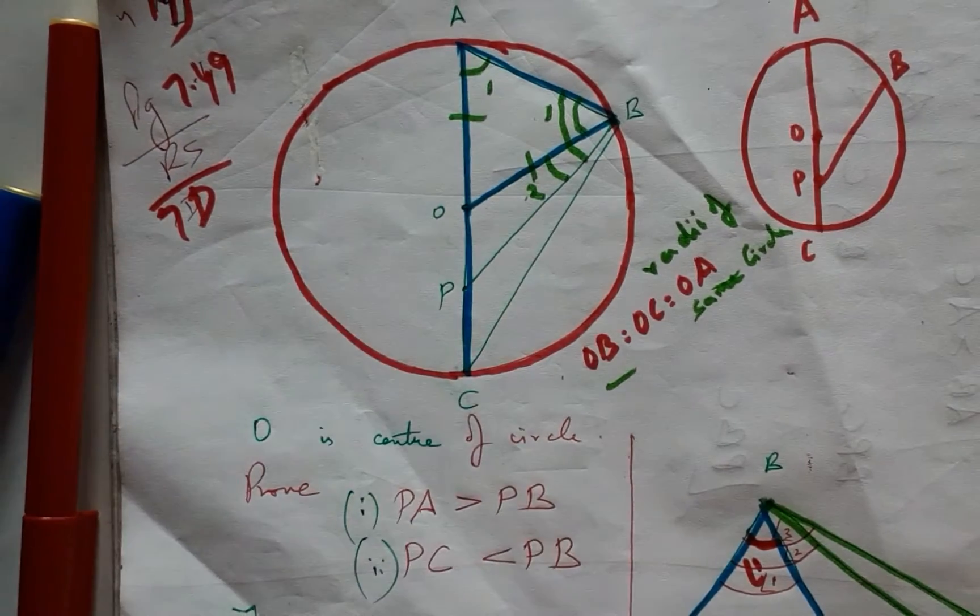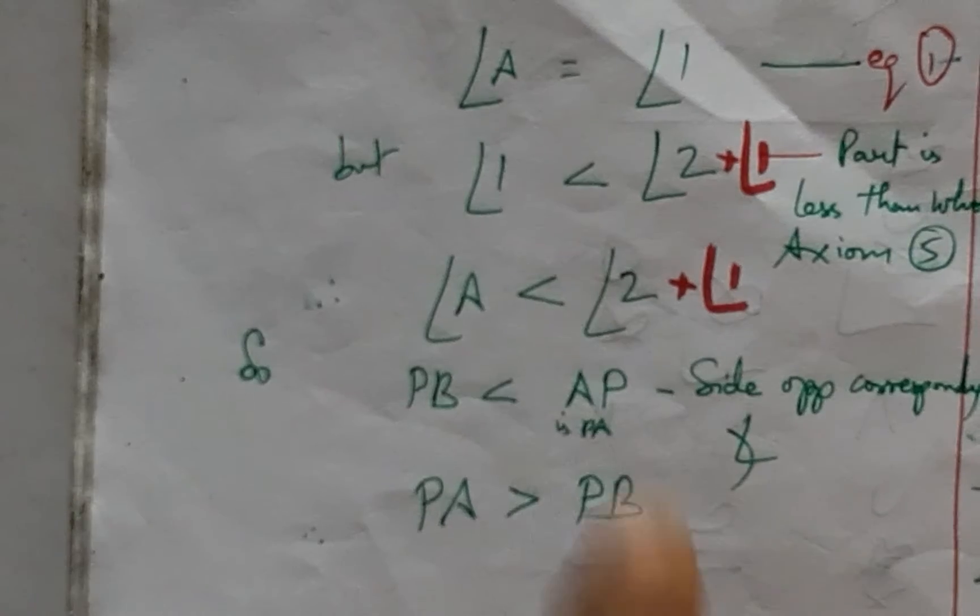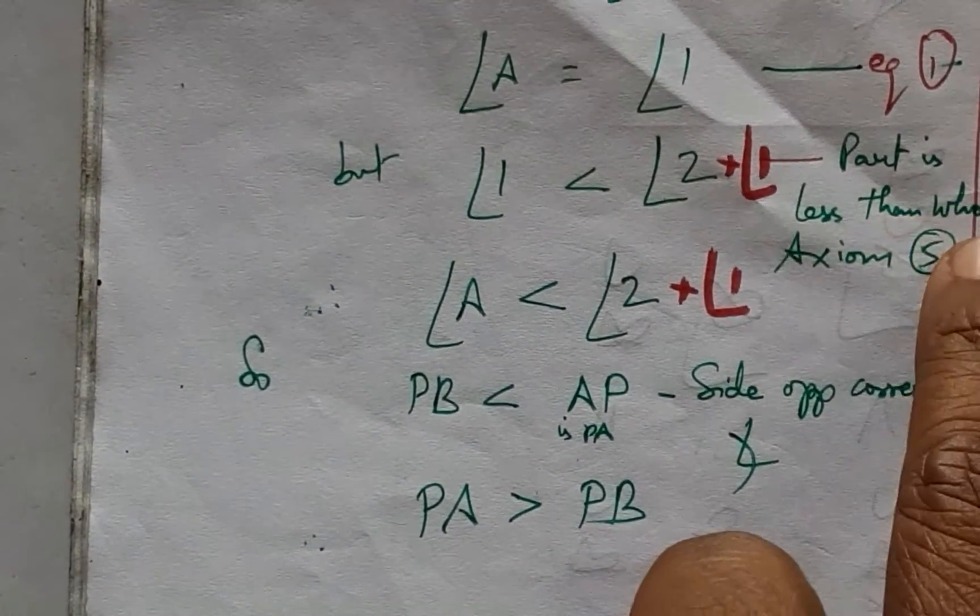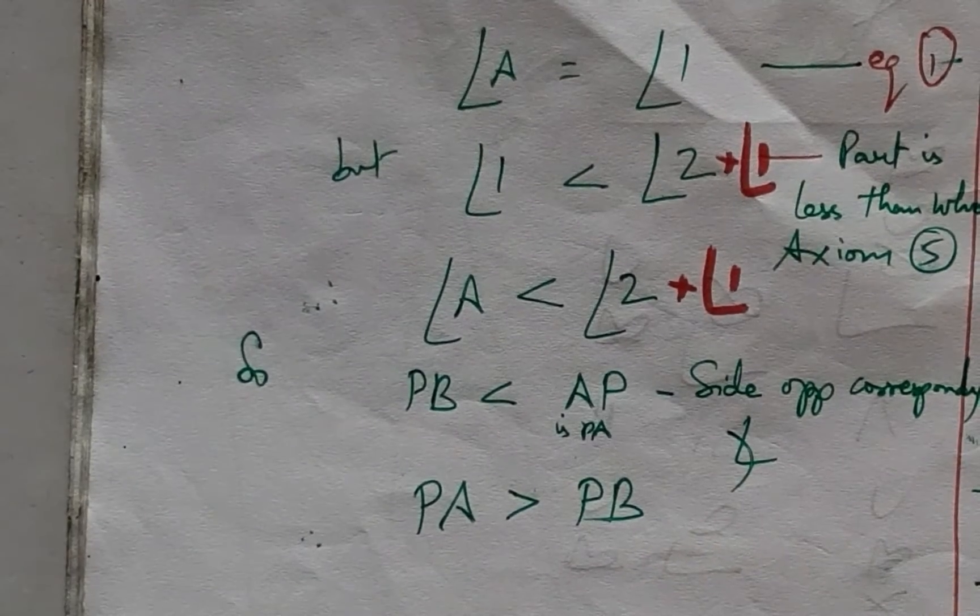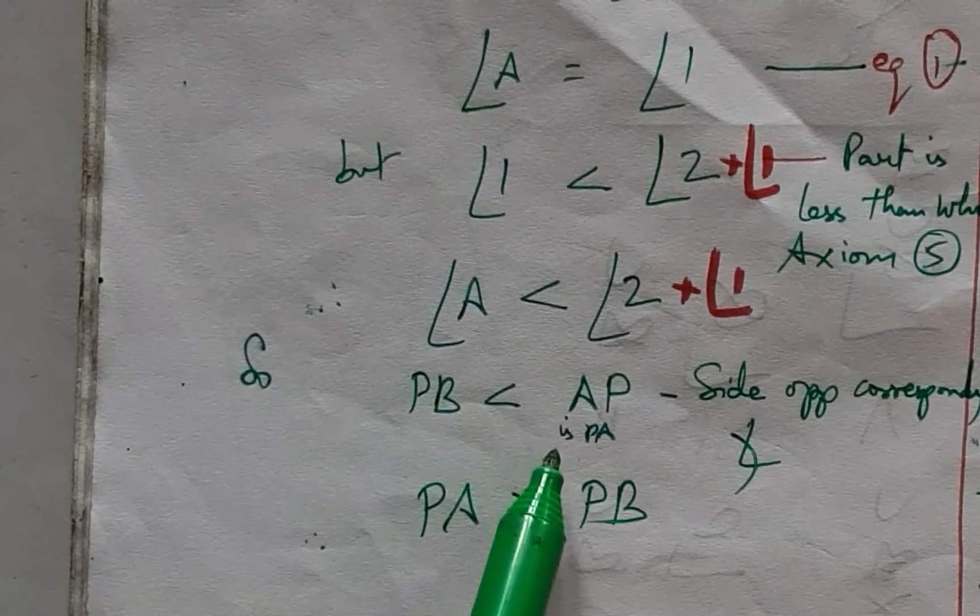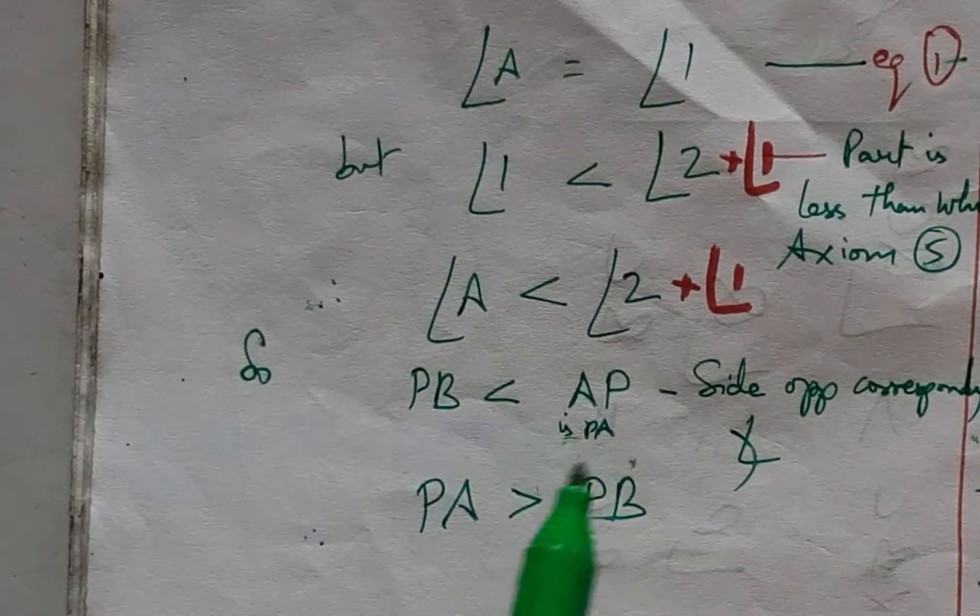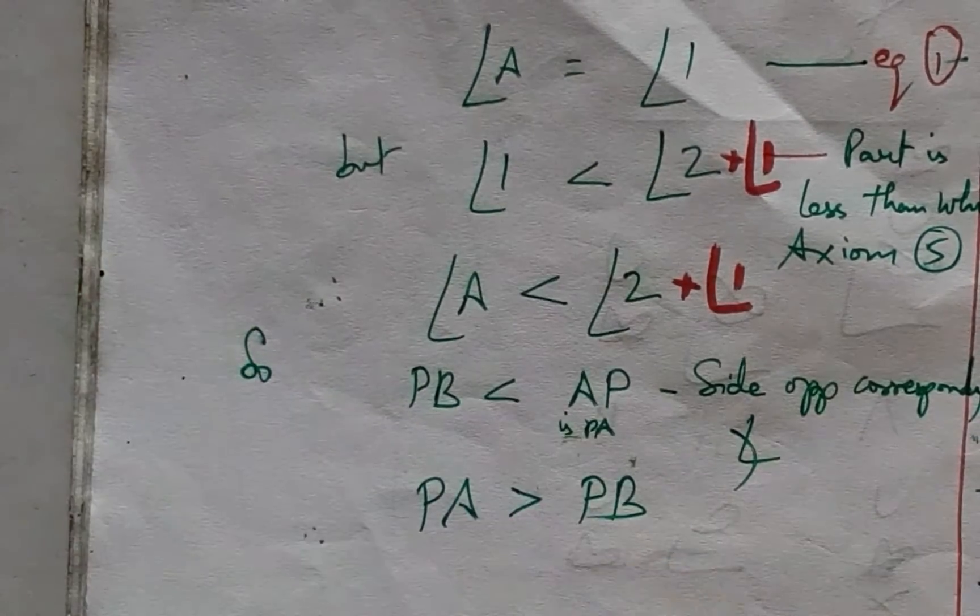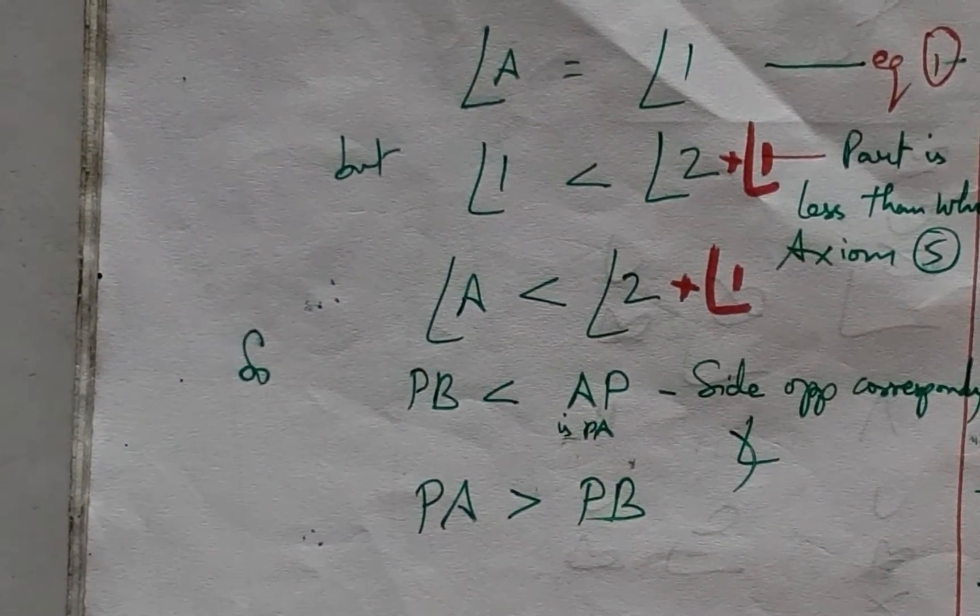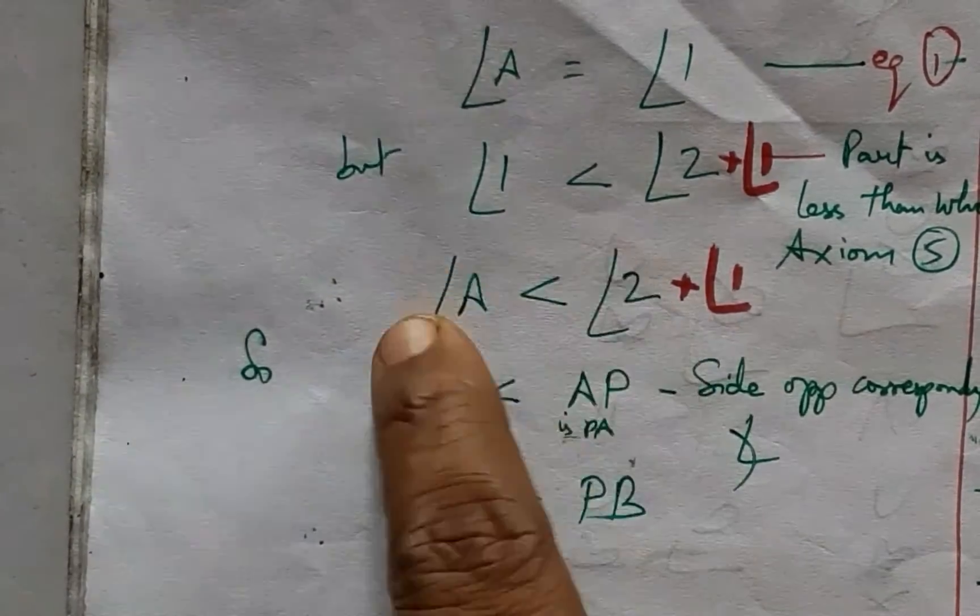The reason for that is the part is always greater—the whole is always greater than the part, Euclid axiom 5. According to that, we have PB is less than PA, and the converse can be said that PA is greater than PB because these are the sides corresponding to these angles of the triangle PBA.